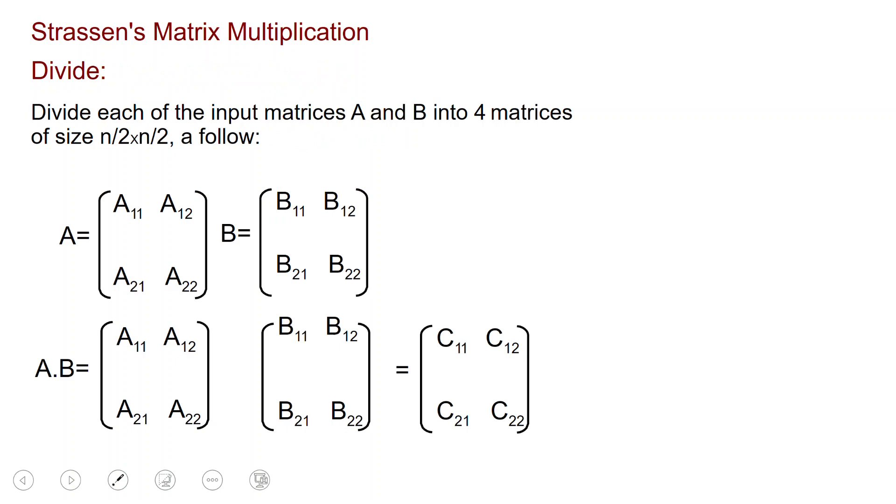The divide is as follows. We are going to divide each of the input matrices A and B into four matrices, each of size n over 2 by n over 2. So we take the original matrix A, we divide the rows in half, we divide the columns in half, and we obtain these four submatrices. Same thing for B.